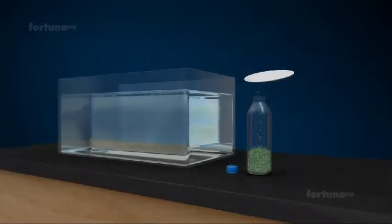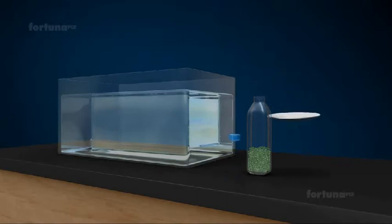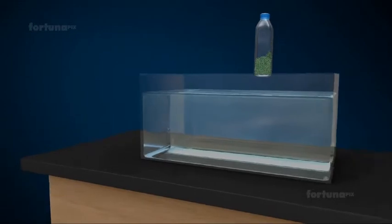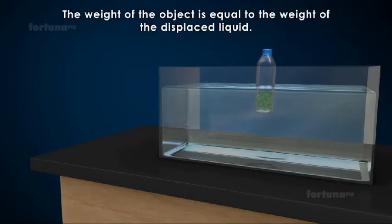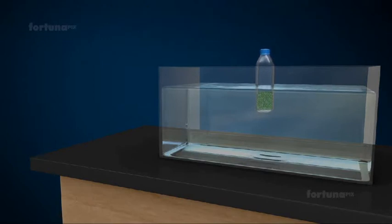Now pour some of the pea gravel into the bottle, filling it about half full, and screw the cap on. When you set the bottle in the aquarium this time, it will stand upright, suspended in the water. In instances like this, the weight of the object is equal to the weight of the displaced liquid and the buoyancy type is referred to as neutral buoyancy.